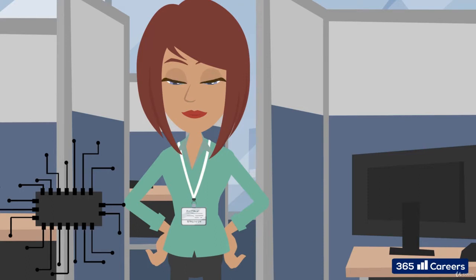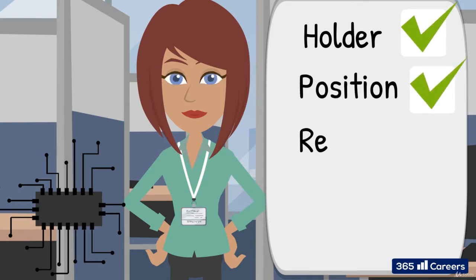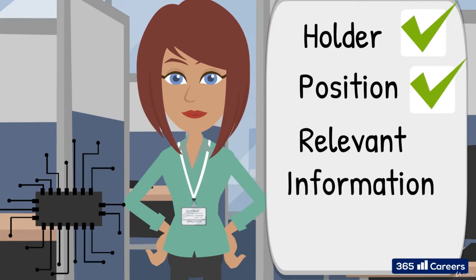The chip it contains provides information about its holder, about his or her position, and any type of relevant data that has been stored in the system. Modern badges are even more secure. They require holders to use biometric identification such as fingerprint or eye scan.